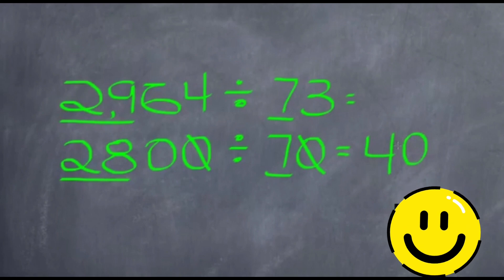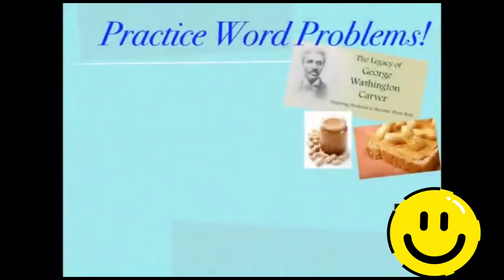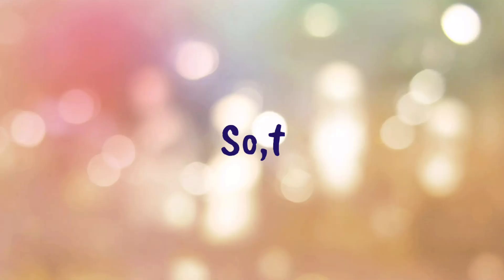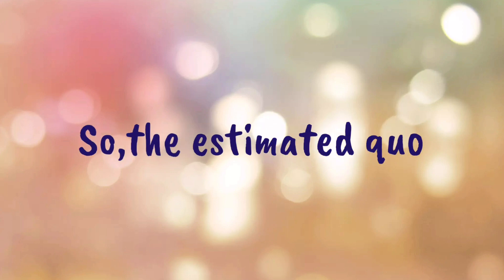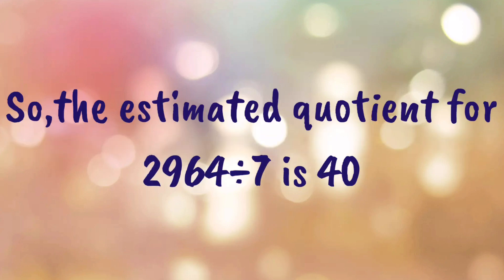28 divided by 7 is 4. When we cancel one zero, we get answer as 40. So the estimated quotient for 2,964 divided by 7 is 40.